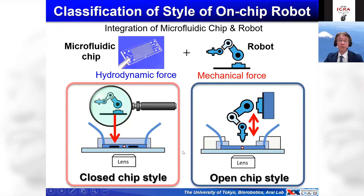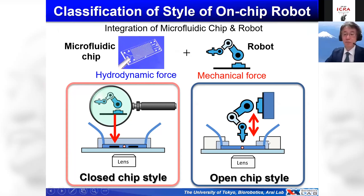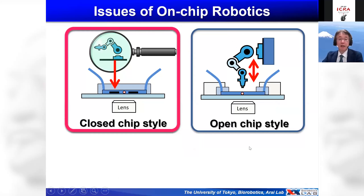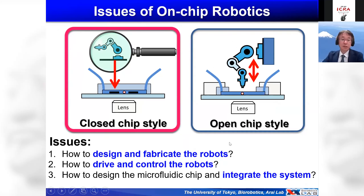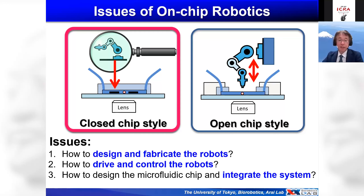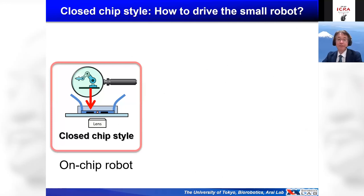In the closed chip style, we miniaturize the robot and put it inside the microfluidic chip, where it is controlled by some manipulation method. In the open chip style, part of the microfluidic chip is opened so the mechanical manipulator can directly access the open channel. For the closed chip style, the key issues are: how to design and fabricate the robot, how to drive and control the robot, how to design the microfluidic chip, and how to integrate the system.